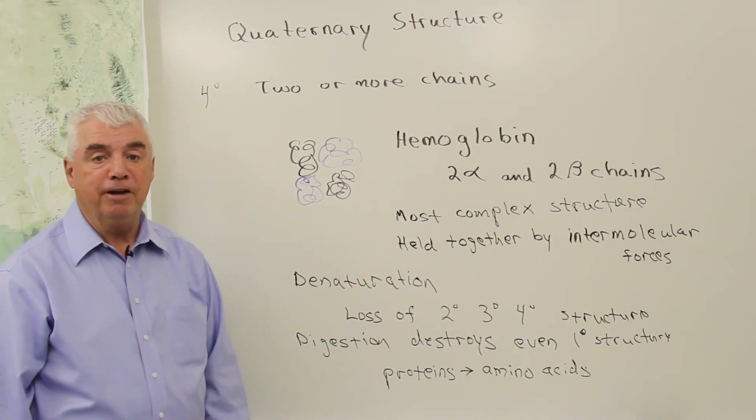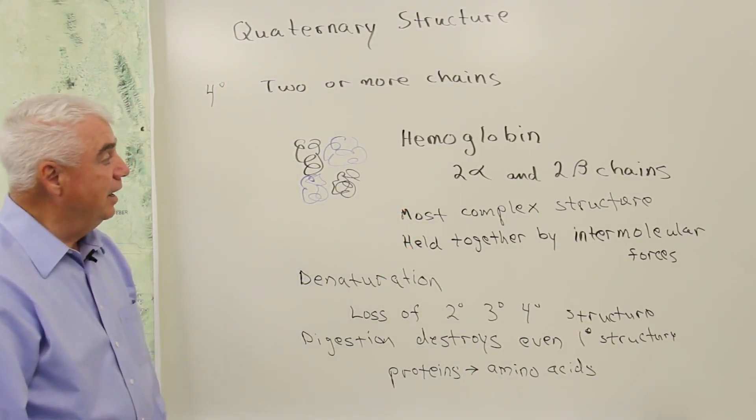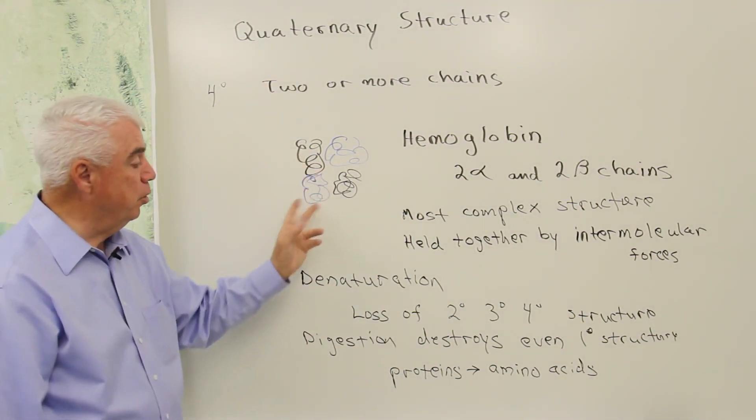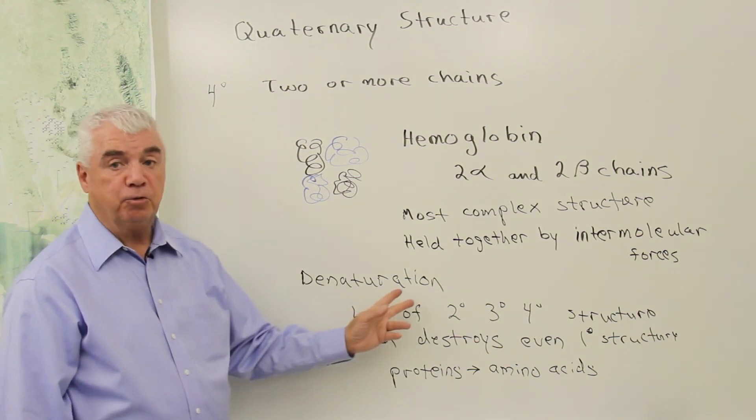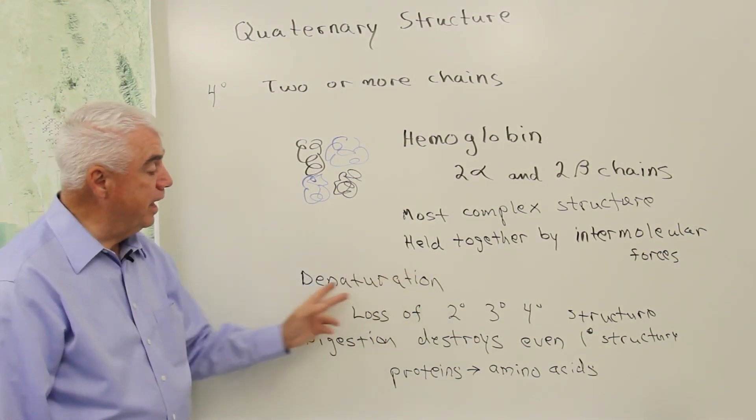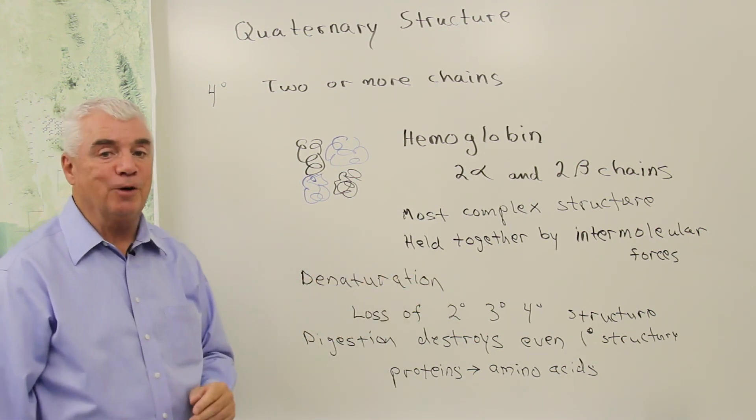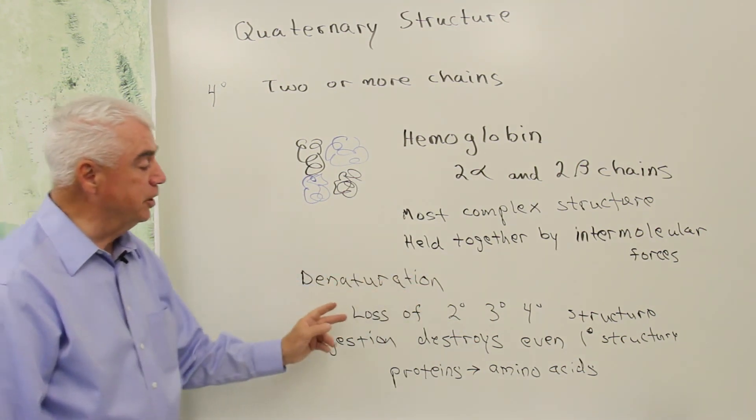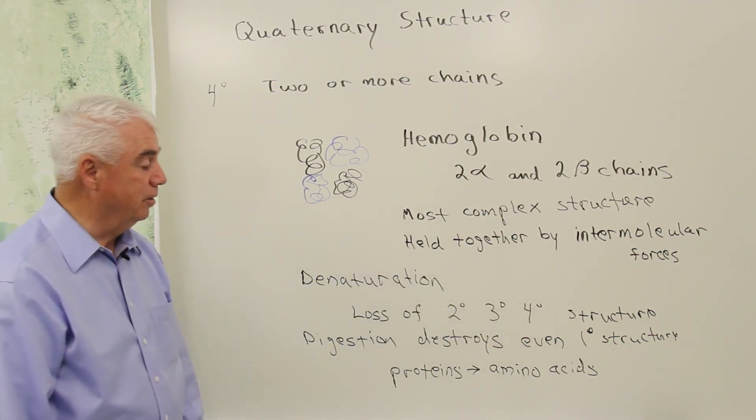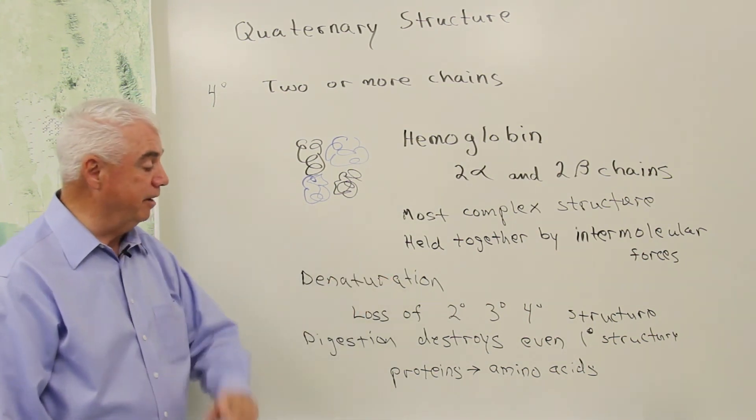through all the kinds of intermolecular forces that we've talked about. Quaternary structure and the forces that hold together can be disrupted also quite easily. And when that happens, we use this term denaturation. Denaturation is the loss of secondary, tertiary, and quaternary structure. And usually that means that the protein is no longer effective.